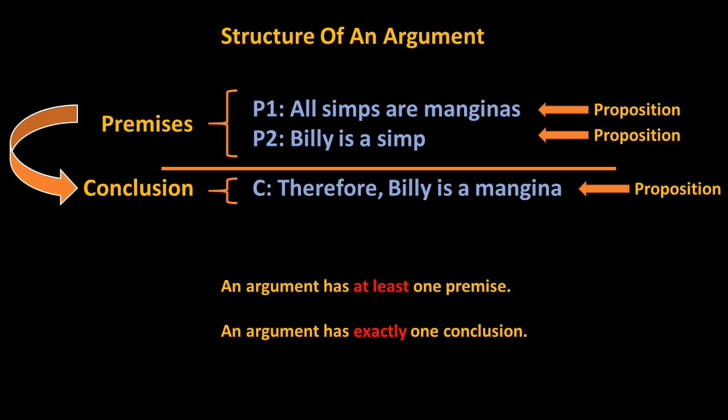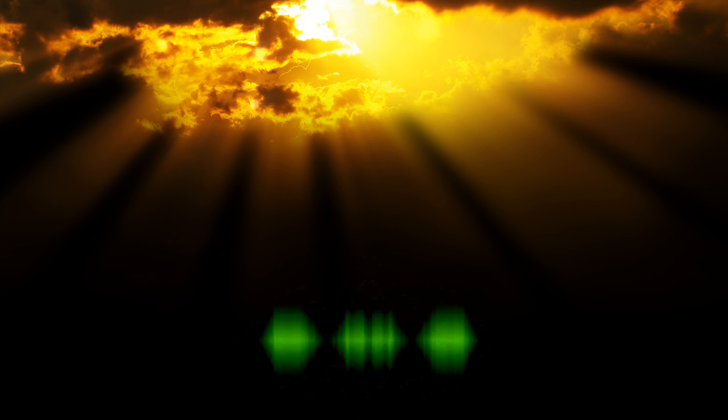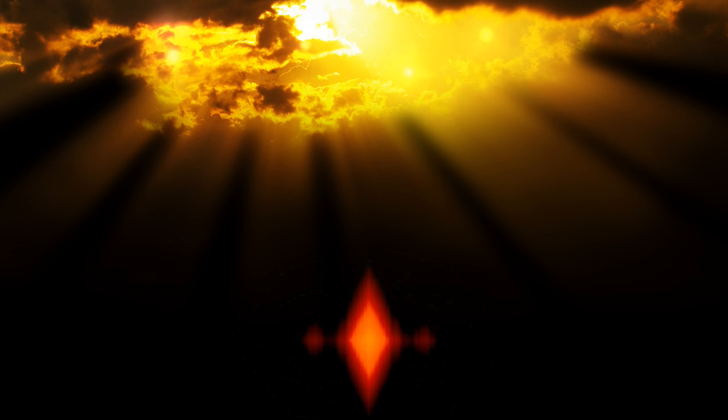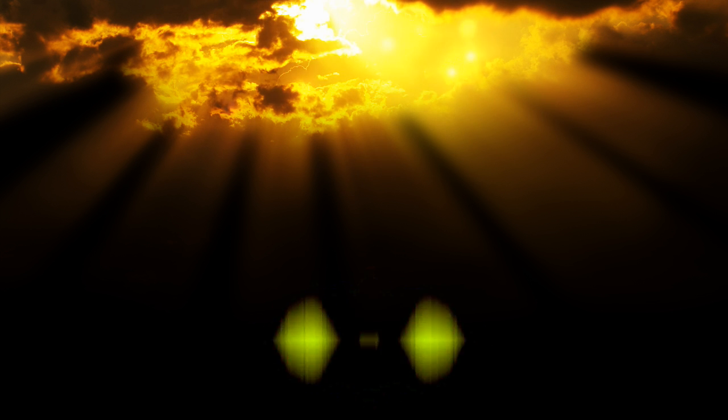It is not necessary that the premises present actual evidence or true reasons, nor that the premises actually support the conclusion. But at least the premises must claim to present evidence or reasons, and there must be a claim that the evidence supports or implies something. You should recognize that this second claim is not equitable with the intentions of the arguer — intentions are subjective and usually not accessible to the evaluator. Rather, this claim is an objective feature of an argument grounded in its language or structure. Such a claim can be either explicit or implicit.